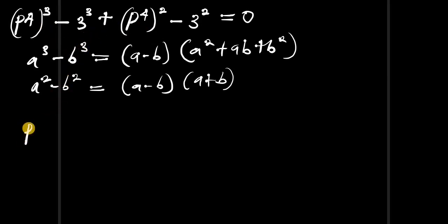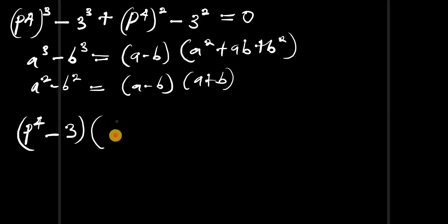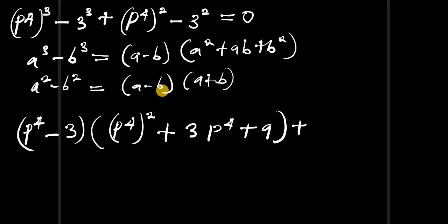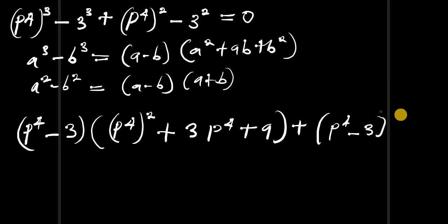Let's plug these into the equation. For the first part, a is p^4 and b is 3, so we have p^4 minus 3, times p^4 squared plus 3 times p^4 plus 3 squared, which is 9. Then for the second part, a is p^4 and b is 3, giving p^4 minus 3 times p^4 plus 3, equals zero.